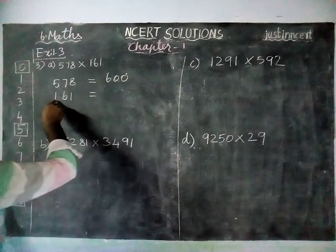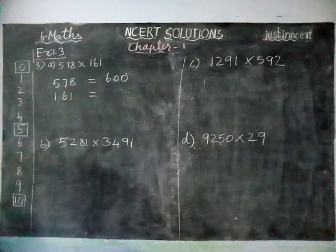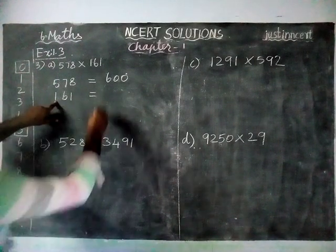And next, here 161 is there. The 10's place is 6, so we choose the next 100, which is 200.